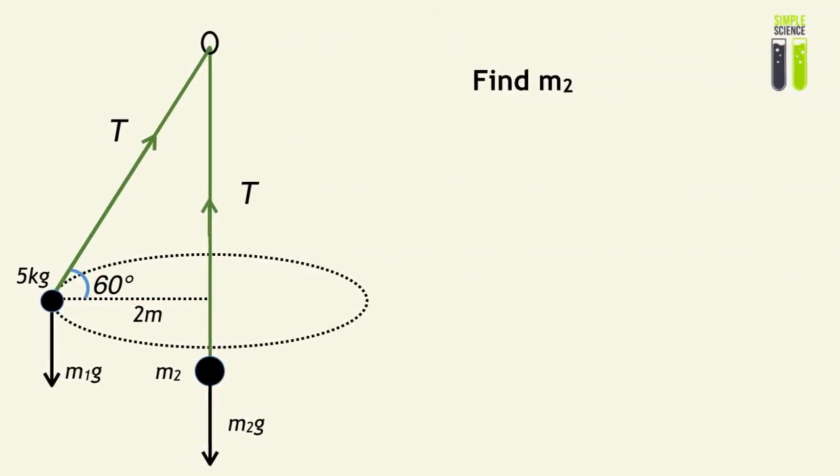A typical question you might be asked is to find M2, a mass we don't know, but we know every other component of M1. We know that T equals M2g, as previously said, and T sin 60 equals 5g when considering the forces acting on M1. We can rearrange that to find T.